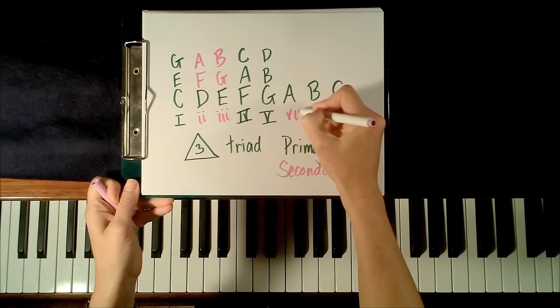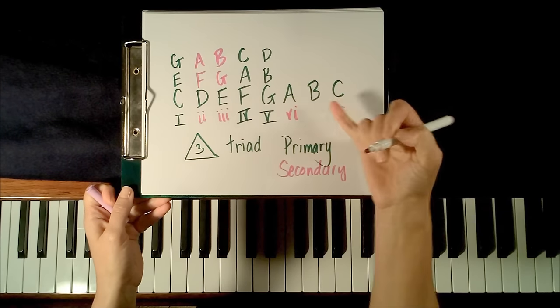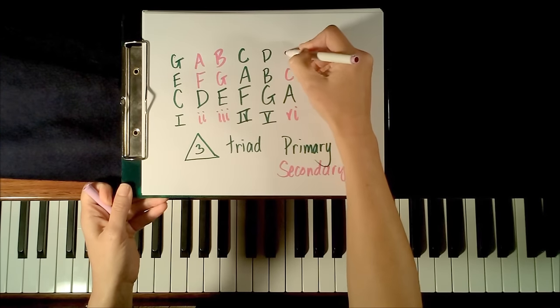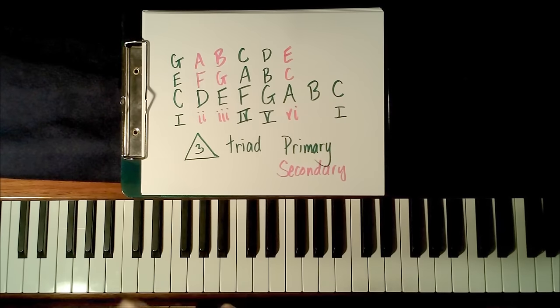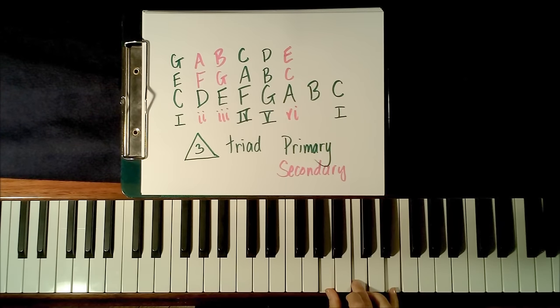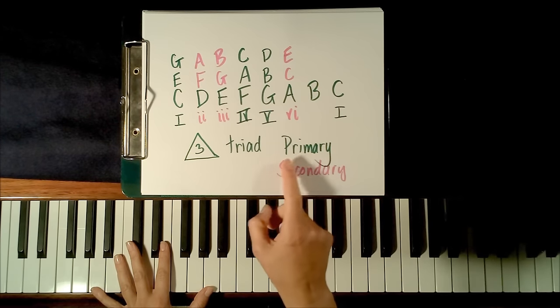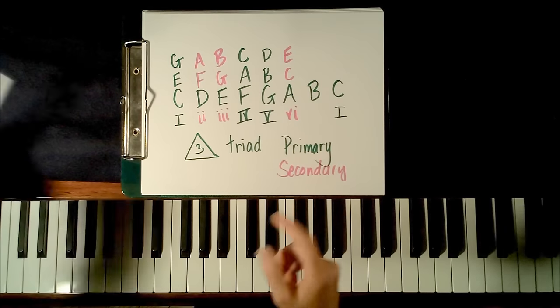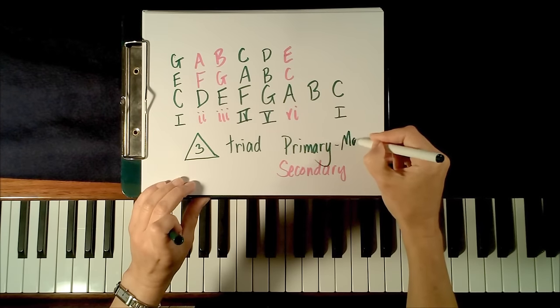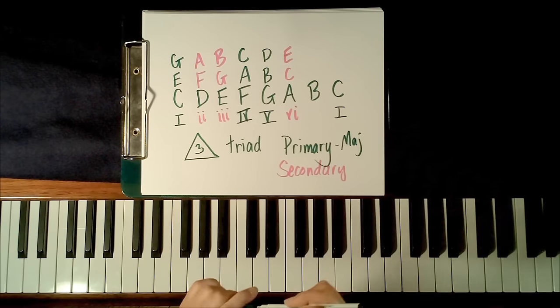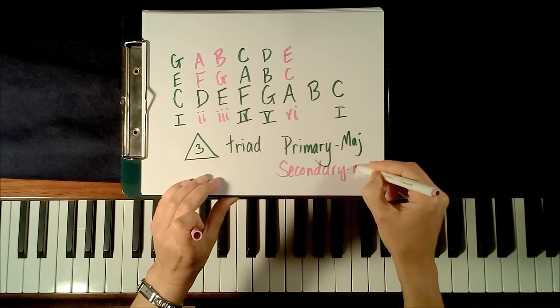And then we can also make a six chord over A, which is A, C, and E, going up by skips. So here we have A, C, and E. Will this be major or minor? Two piano keys skipped between the first and third note. This is a minor triad. So you may have noticed a bit of a pattern. All of our primary triads, or primary chords, have a major sound. And all of our secondary chords have a minor sound.